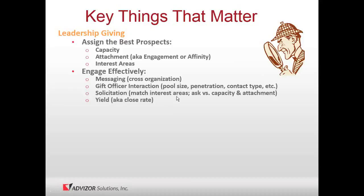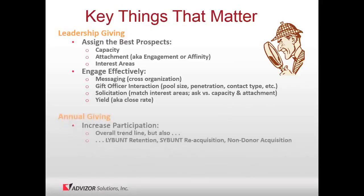For solicitation, the ask should match the interest area and be proportionate to the capacity rating and attachment level. A million-dollar potential gift may not be good if the person could give $15 million — you don't want to leave money on the table. Yield, close rate, and pipeline management all matter. The right prospects with capacity, engagement, and interest — consistently messaged, followed up, asked appropriately, and closed — that's what really matters.